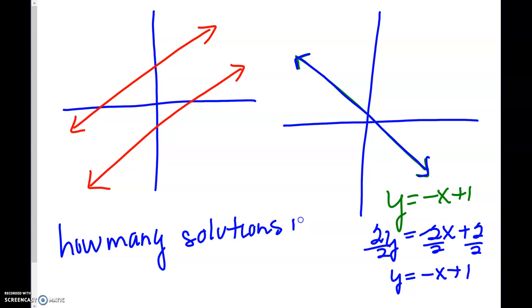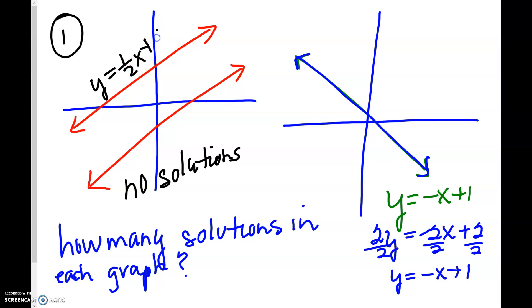In this first one, in graph number one, how many solutions do those two lines have in common? How many places do those two red lines meet? And they have no points in common. So this is going to be considered no solutions. These lines are parallel. So this equation in this top one could be something like y equals one-half x plus 4, and the second equation could be something like y equals one-half x minus 5. And what do we notice about these two red lines? If we're talking about parallel lines, their slopes are going to be the same. And that's why they're parallel. And that's why there's no solutions.